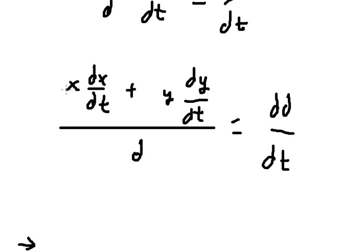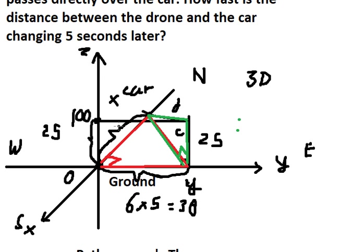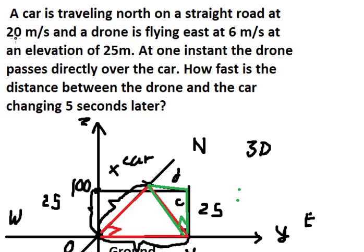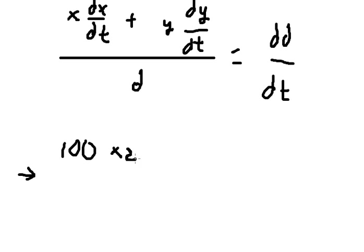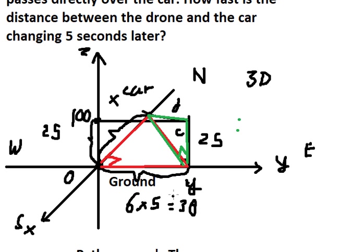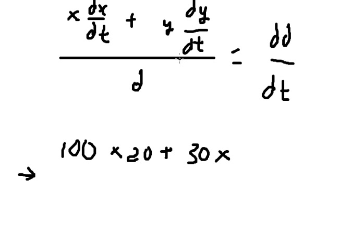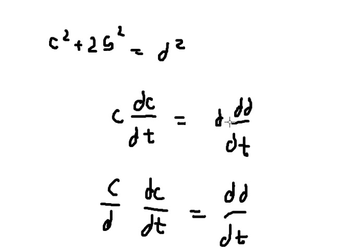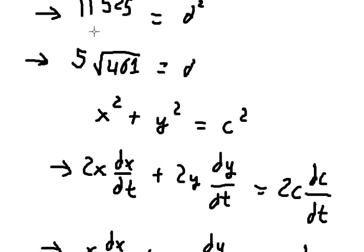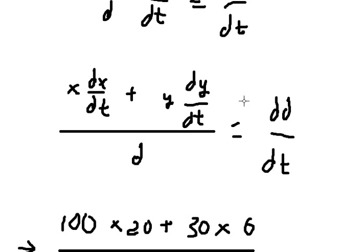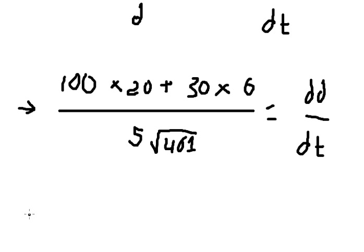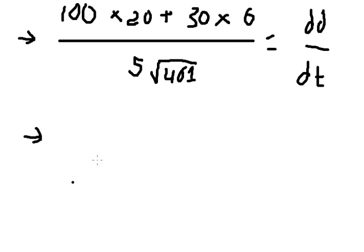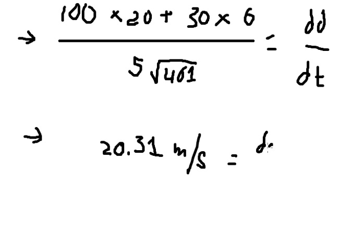So x is about 100 as we just calculated. dx/dt is about 20, y is about 30, and dy/dt is about 6. d we just calculated. We input everything and we get about 20.31, and this is the final answer.